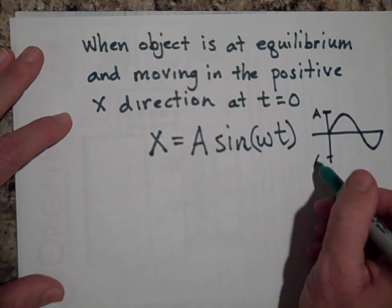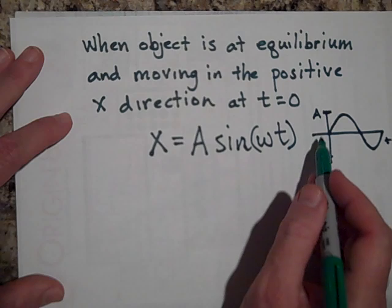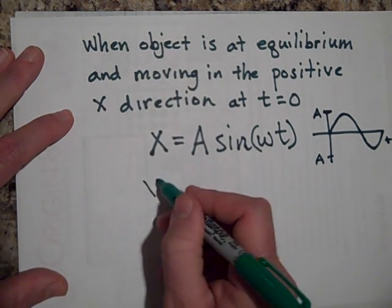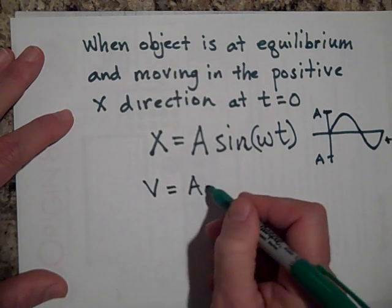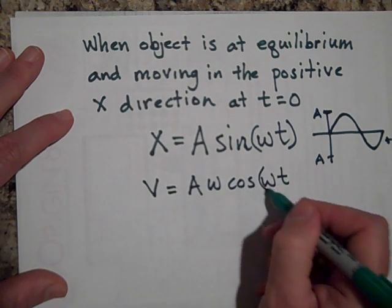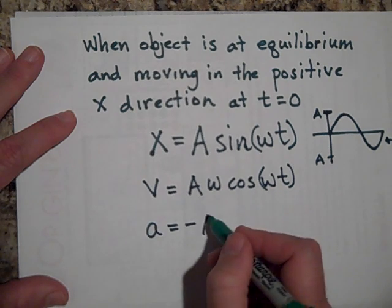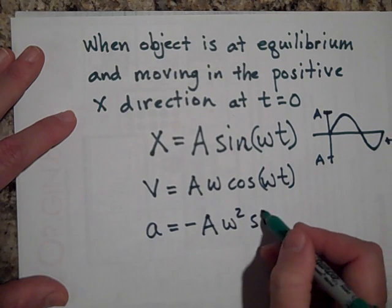If this is t and this is x, this is the x-axis. Okay. Well, if that's the case, then our velocity will be the derivative of this, which is A omega cosine omega t. And the acceleration will be the derivative of that, which will be negative A omega squared sine of omega t.